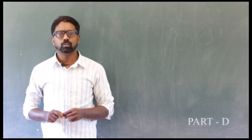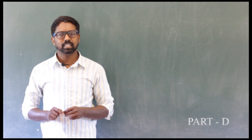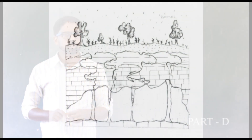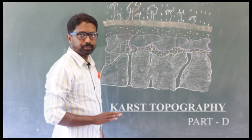Let us look at a few landforms created by underground water. Observe the picture. A cave is formed by the solution of limestone in underground water. This is the result of rainwater acting on limestone.